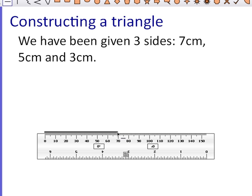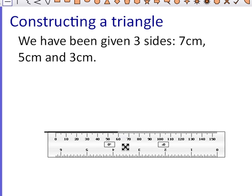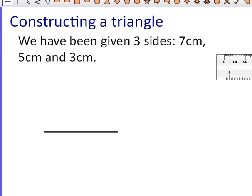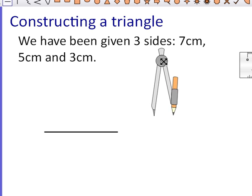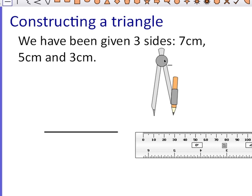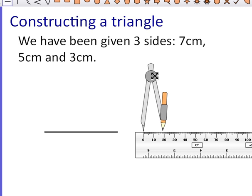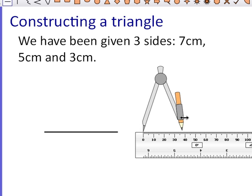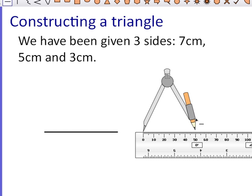The next thing we need to do is create sides of five centimetres and three centimetres. To do that we're going to need our compass — our pair of compasses — and our ruler. So to get a side of five centimetres I'm going to match up my needle with zero on my ruler and then open out my compass to five centimetres.